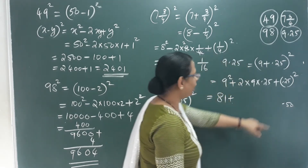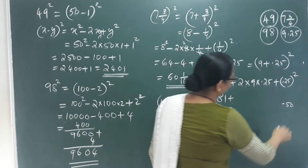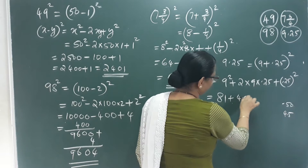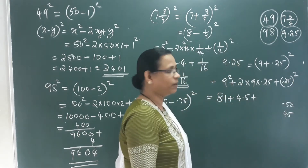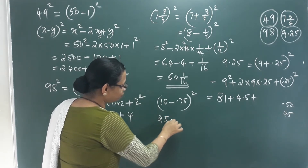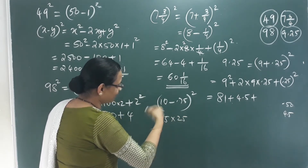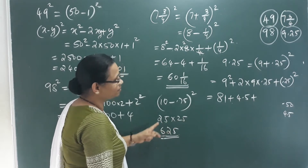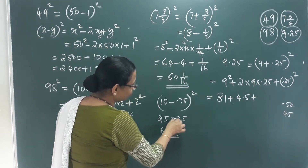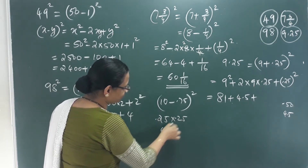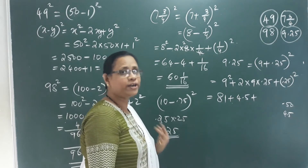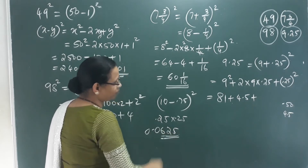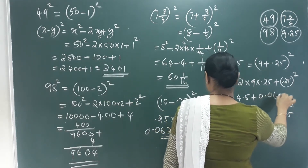We are taking 0.25 as y. Now we apply the formula. 4.5 plus 25 into 25. We multiply 25 into 25. The next number is 3, so 3 into 2 is 6, then 6 into 25. Counting decimal places: 1, 2, 3, 4 — this gives 4 decimal places. We get 0.0625.